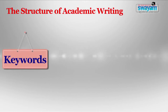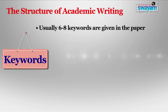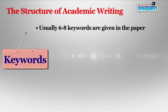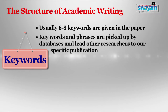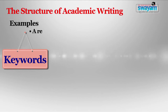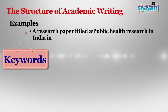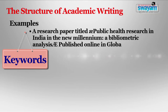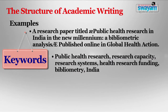In many journals, the format demands that a few important keywords be provided in the research paper. Usually, six to eight keywords are given in a paper. Keywords are words which are important for understanding of the research work and are used very frequently in the paper. These are indicative of the domains in which our research project falls. Keywords and phrases are picked up by databases and lead other readers and researchers to a specific publication. Hence, these should be well thought out. Keywords should neither be chosen from a very broad base nor from a very narrow slice of our research area. For example, a research paper titled 'Public Health Research in India in the New Millennium: a Bibliometric Analysis' has the following keywords: Public Health Research, Research Capacity, Research Systems, Health Research Funding, Bibliometry, and India.